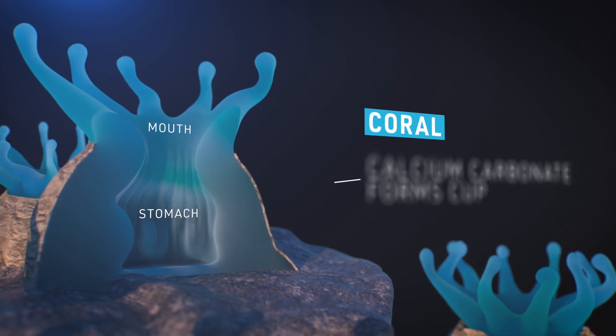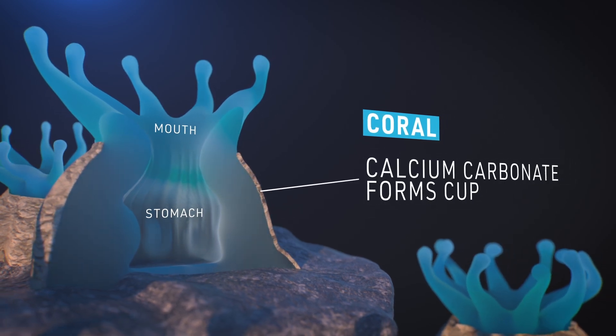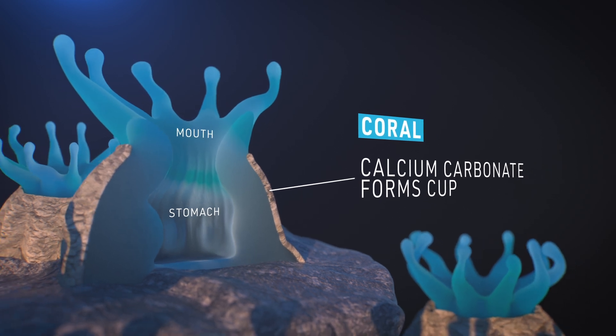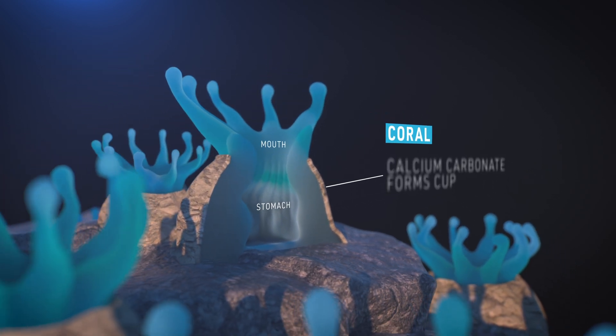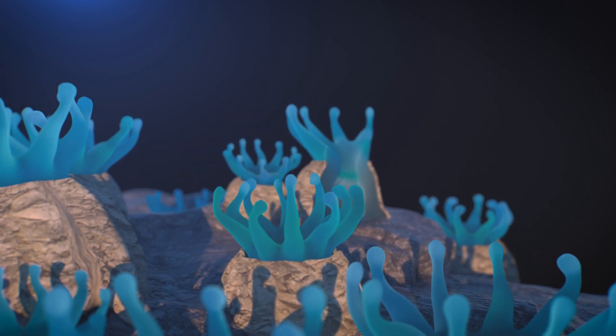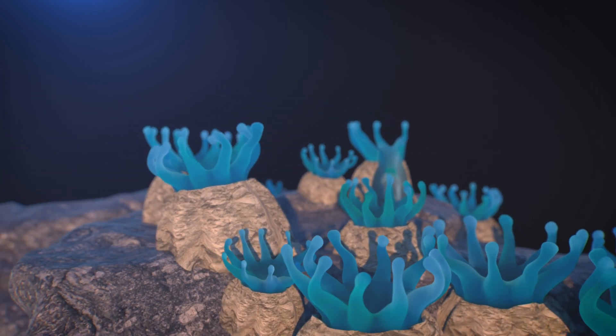Calcium carbonate secreted by the polyps forms a hard protective cup around each polyp. Over many years this results in the huge stony structures we know as coral reefs.